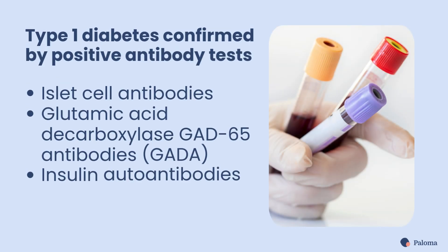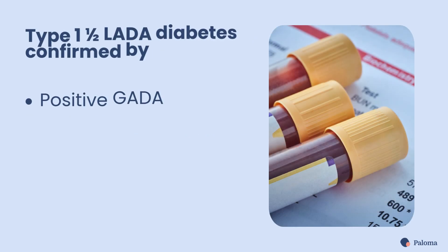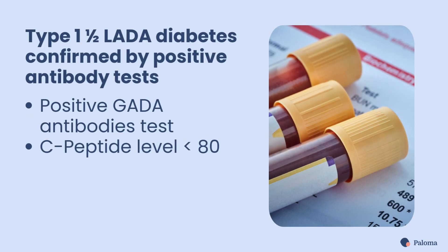In addition to blood sugar tests, diagnosing type 1 or type 1 and a half diabetes requires additional tests. Type 1 is confirmed by one or more positive antibody tests, including islet cell antibodies, glutamic acid decarboxylase GAD-65 antibodies, also known as GATA, or insulin autoantibodies. A diagnosis of type 1 and a half LADA diabetes is typically confirmed with a positive GATA antibodies test and a C-peptide level below 80.